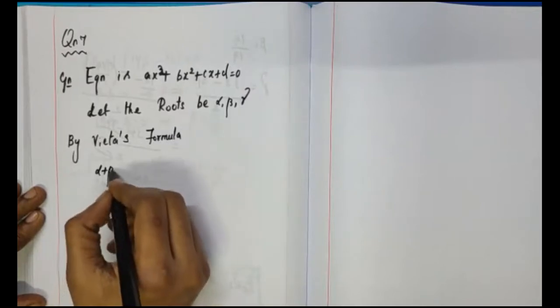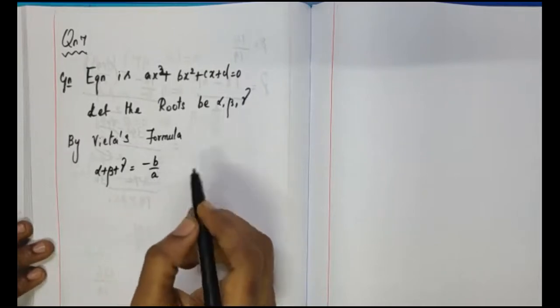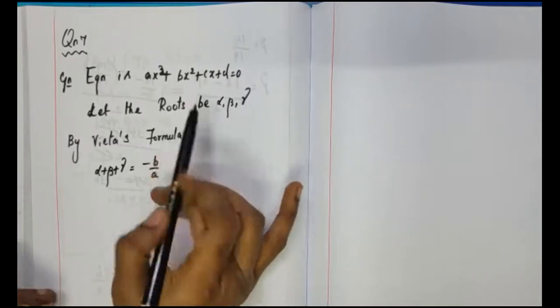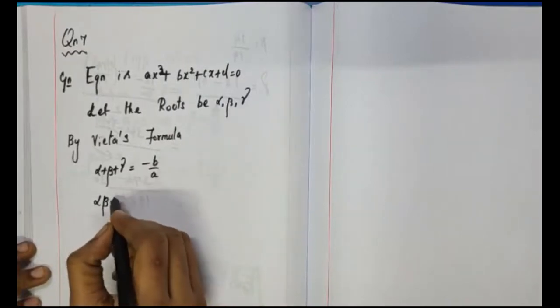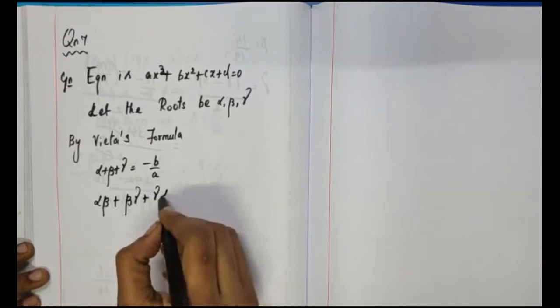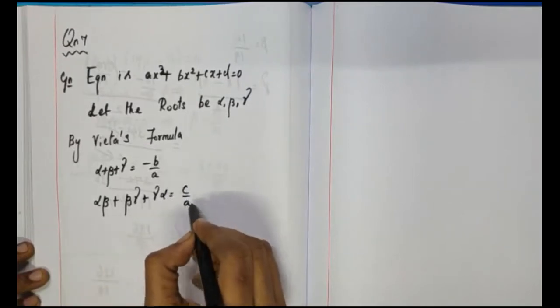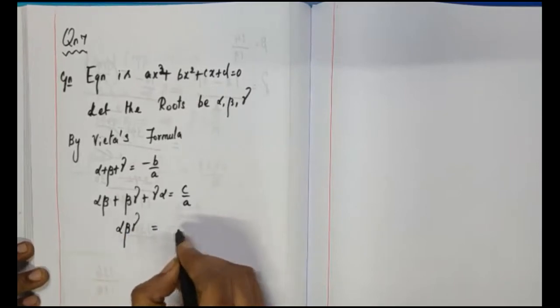Alpha plus beta plus gamma is equal to minus b by a. Then alpha beta plus beta gamma plus gamma alpha is c by a. And alpha beta gamma is equal to minus d by a.